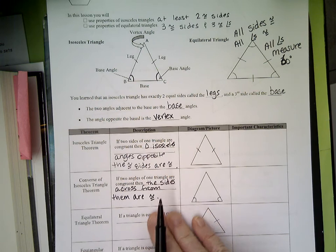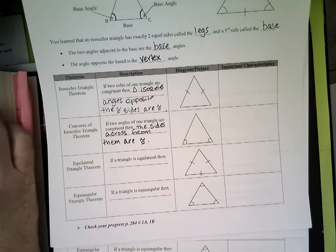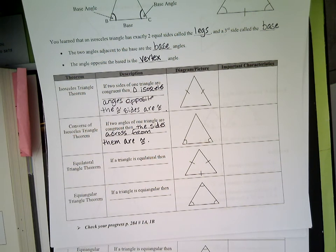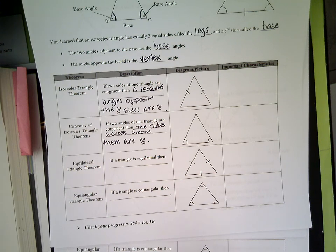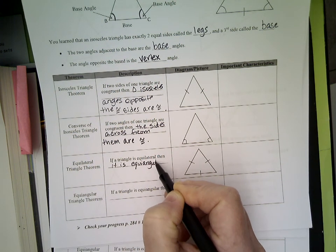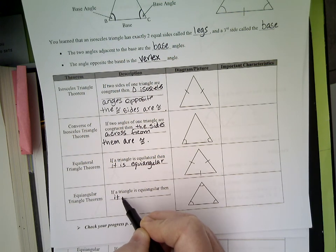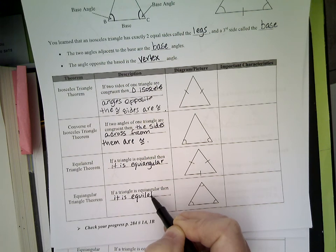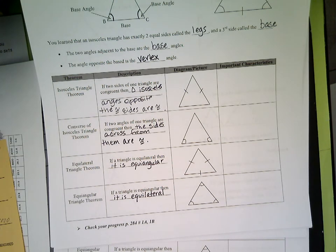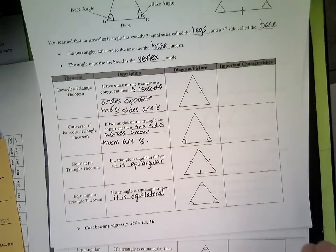Equilateral triangle theorem: if a triangle is equilateral, then it is equiangular. If a triangle is equiangular, then it is equilateral. Any questions on this page? Kind of already knew most of this, we're just verifying those thoughts.